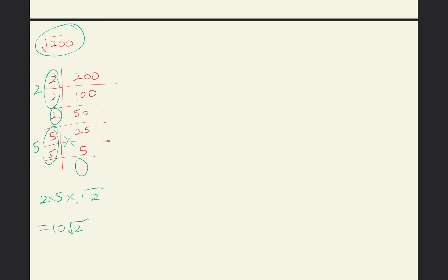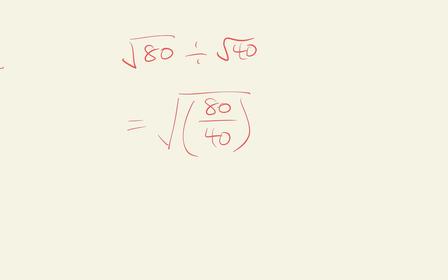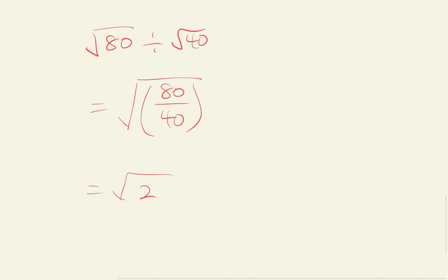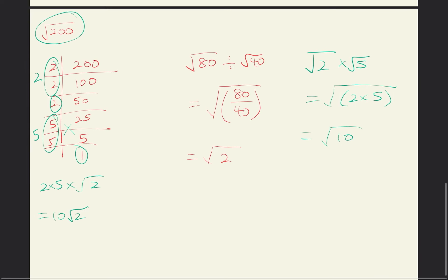A useful tip: when you have two surds dividing, you can express them under one square root — same meaning. Similarly, square root 2 times square root 5 can be written as square root of 2 times 5, which is square root 10. Same thing.